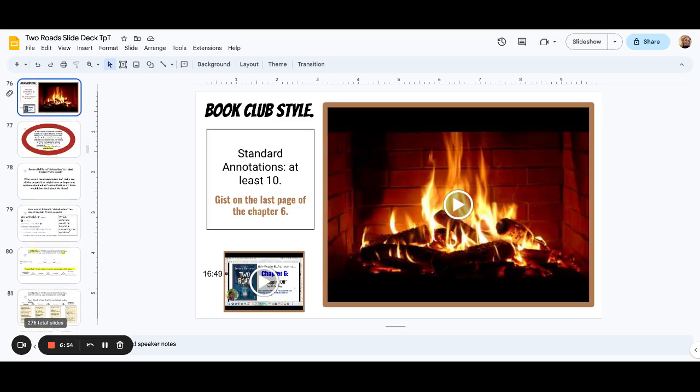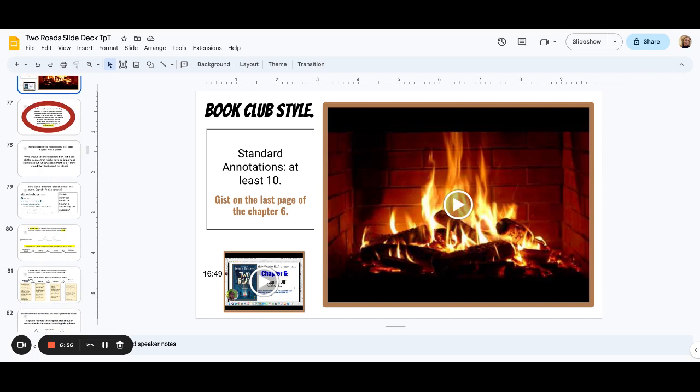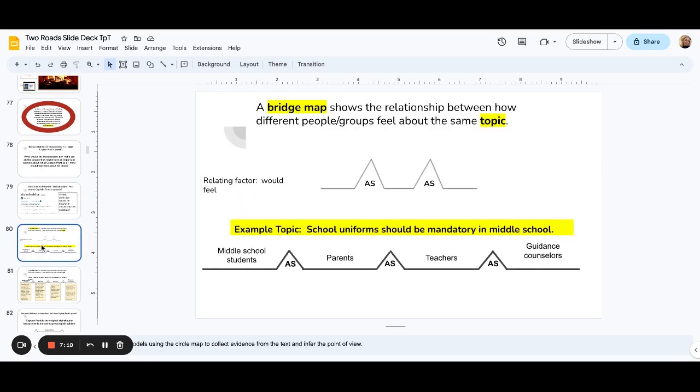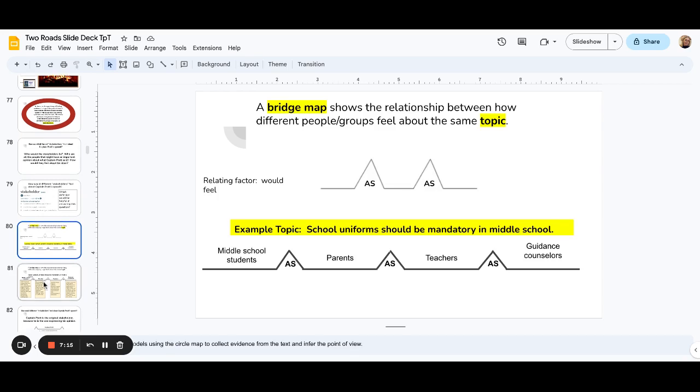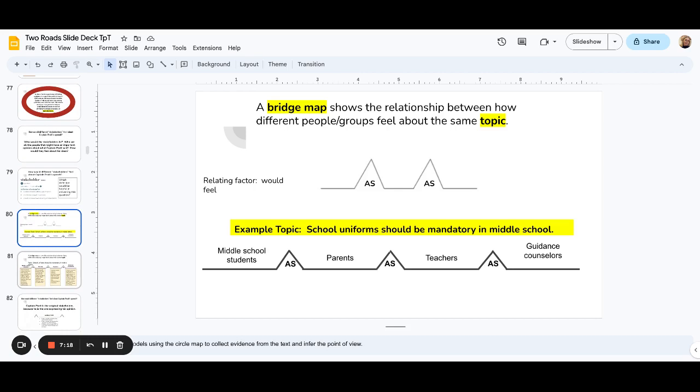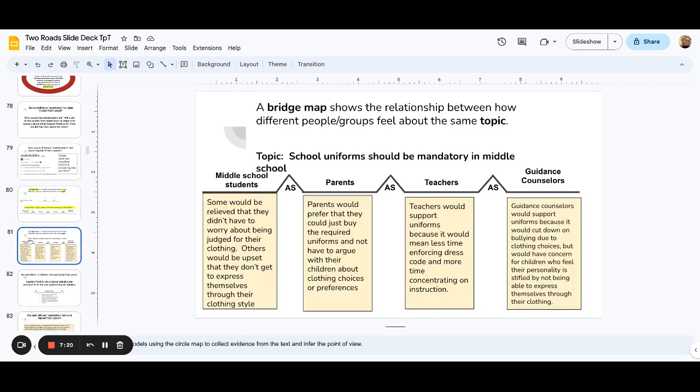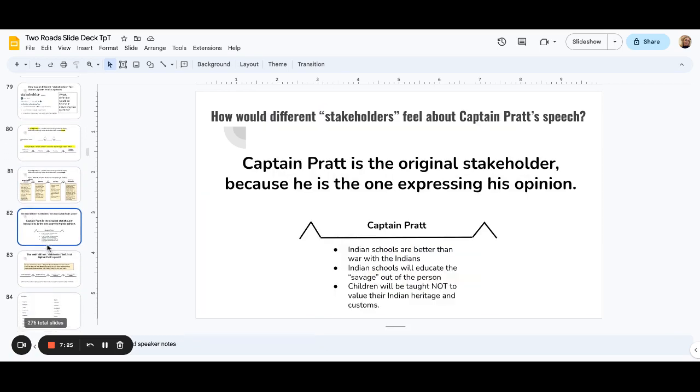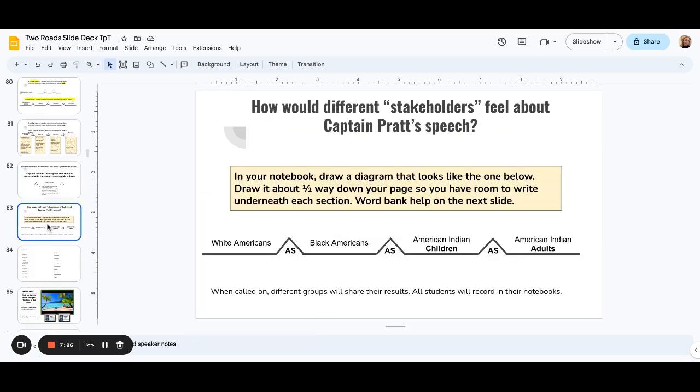So then here's more chapter pages. Standard annotations are detailed in the slide previously that I did not show you. Standard annotations are any annotations that the kids want to write. Focus are the ones that you specifically tell them to do, and it does tell you the difference between them in this slide deck. Here's another cool activity with a map for them to connect what they're doing. So they're going to do a map on should school uniforms be mandatory in a public school, middle school. And then the kids will do this activity together. It does a great group discussion, and then you're going to connect it to Captain Pratt's speech. So these groups, how are they stakeholders in what Captain Pratt's speech was about?